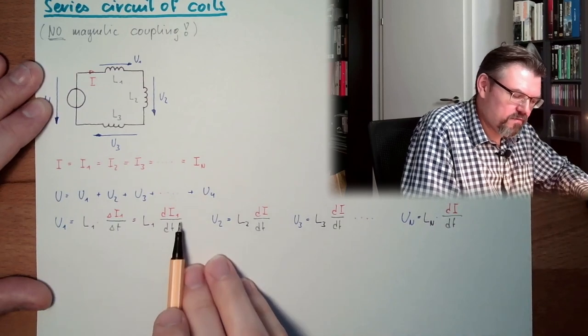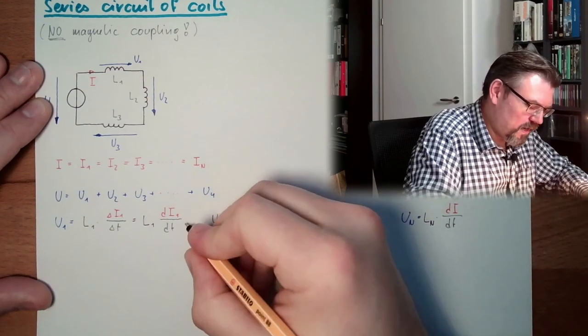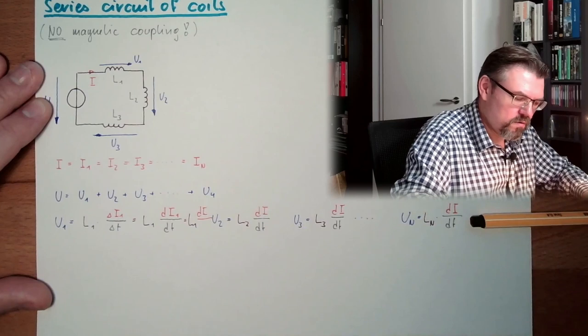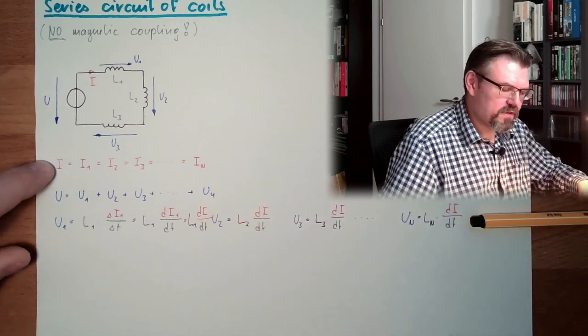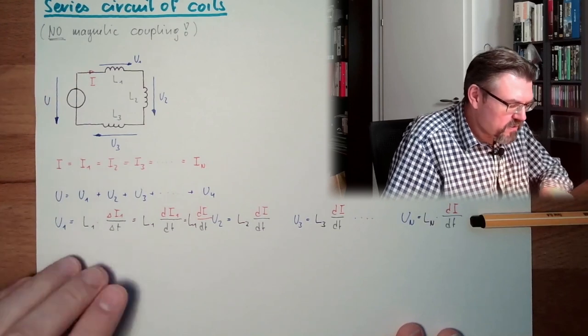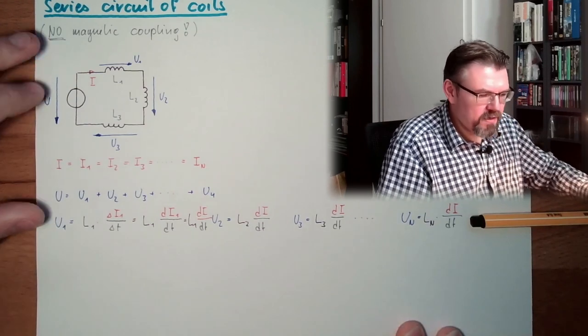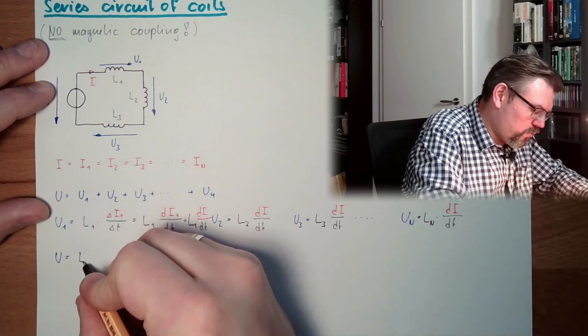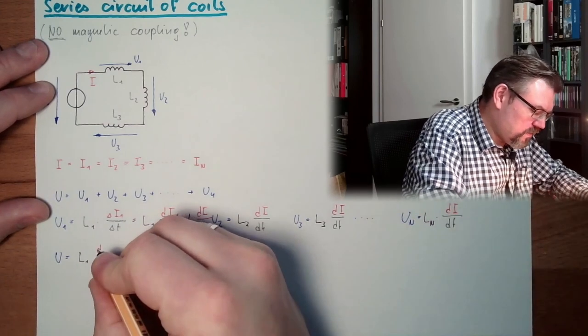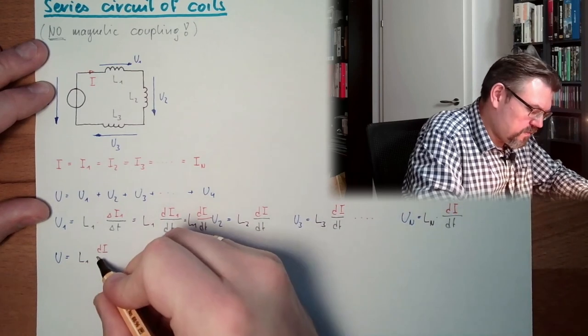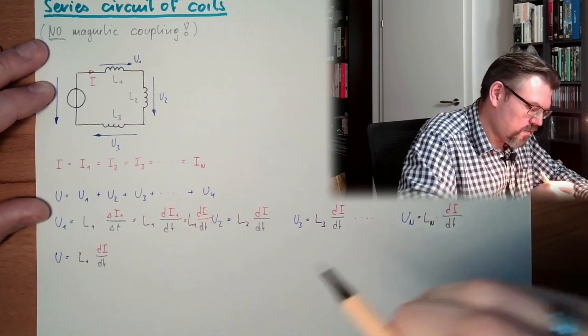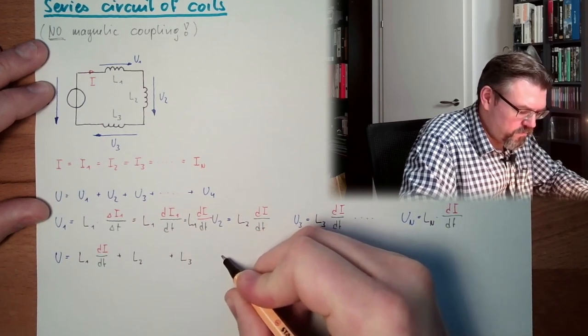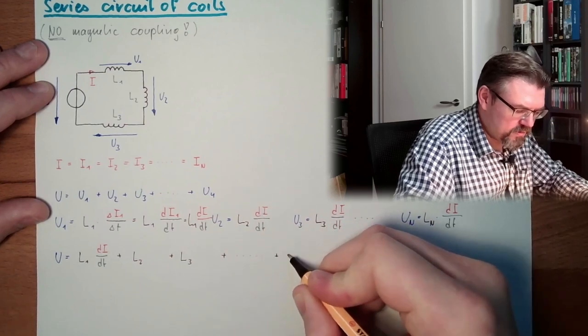It's always the change rate of I, because this here, I will notice L1 and the change rate of I, since all currents are the same. And now let's take all those stuff and put it in here. So we have our U equals U1, L1 dI/dT, plus L2, plus L3, plus LN.